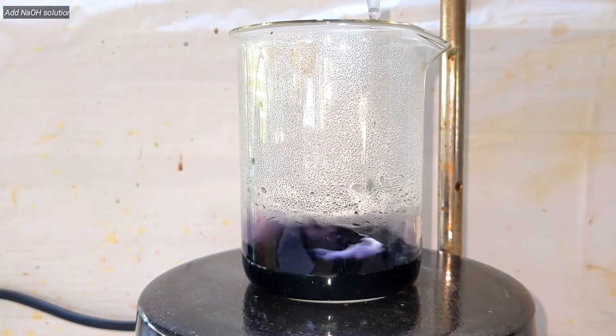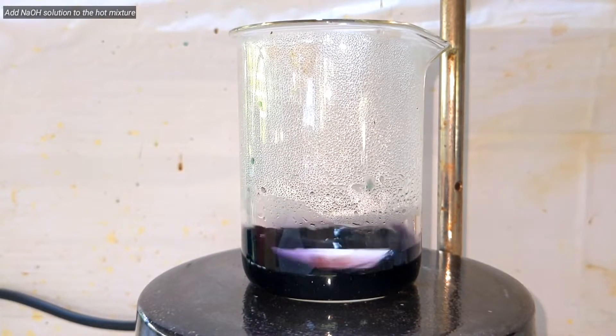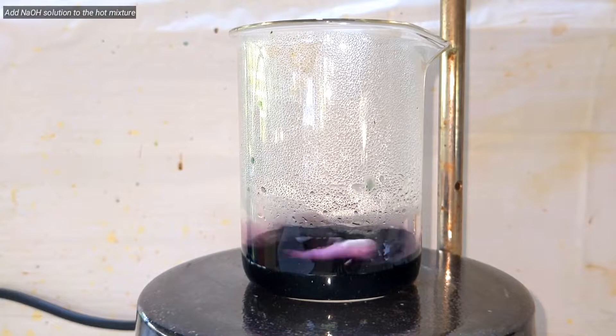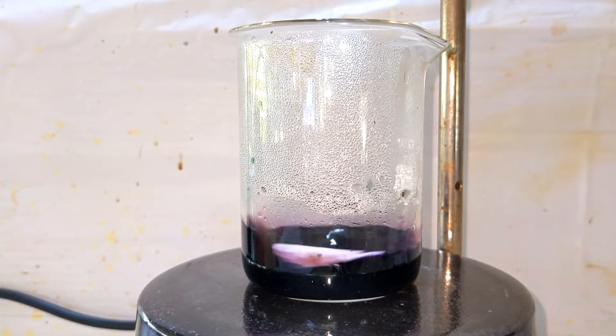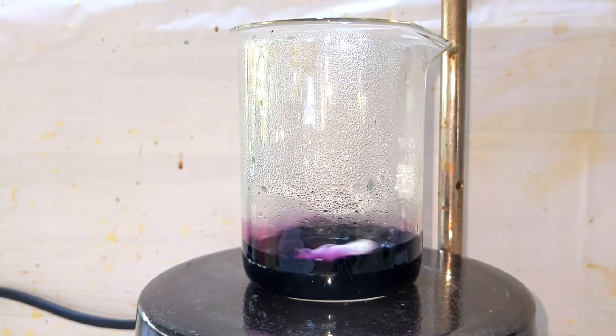You can clearly visualize the color change that is happening. It was initially green and later, after the addition of sodium hydroxide, a purple color is formed which is very similar to the potassium permanganate solution.